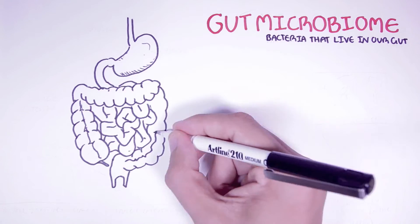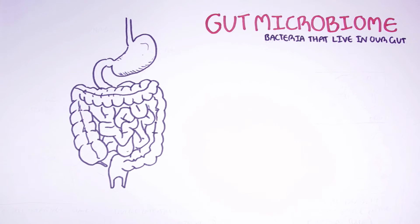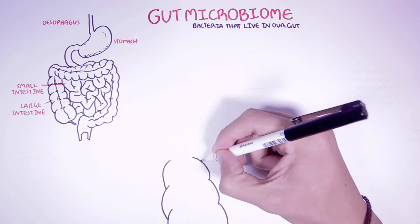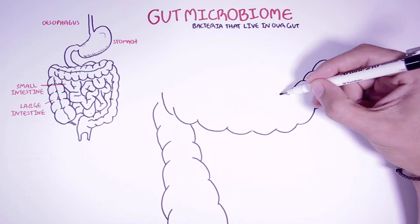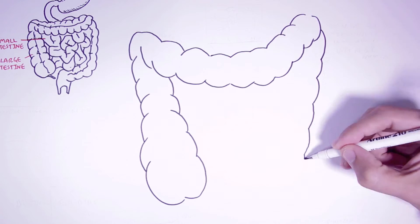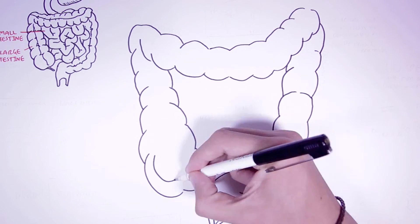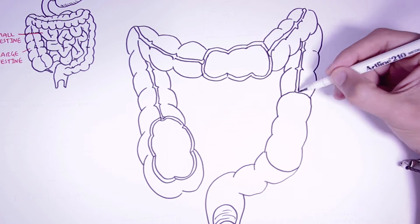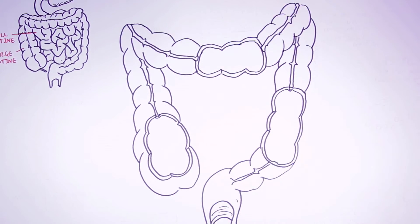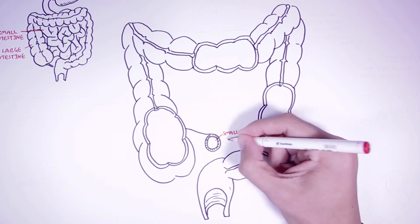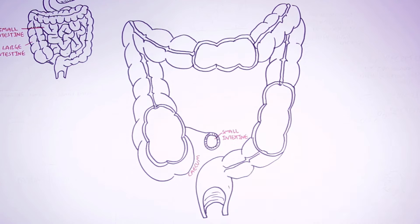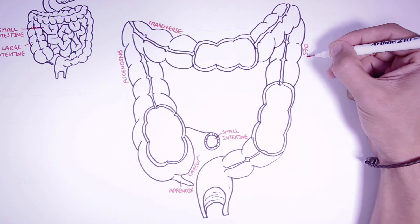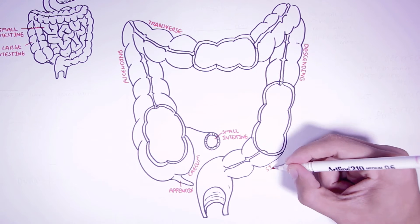We begin with the digestive tract, which is made up of the esophagus, stomach, small intestine, and large intestine. These microorganisms are mostly found in the large intestine. The large intestine is made up of the cecum, the ascending colon, the transverse colon, the descending colon, the sigmoid colon, and rectum.